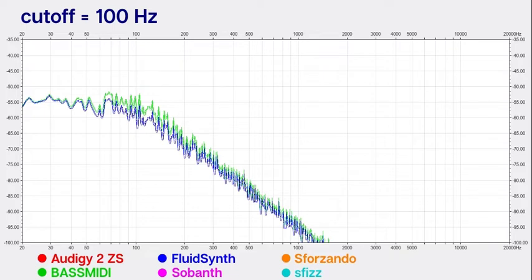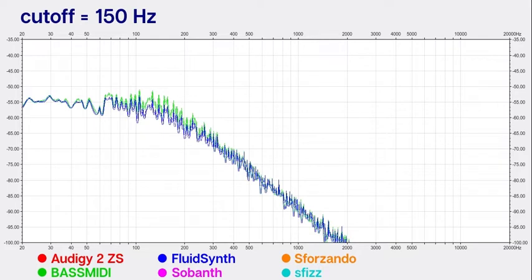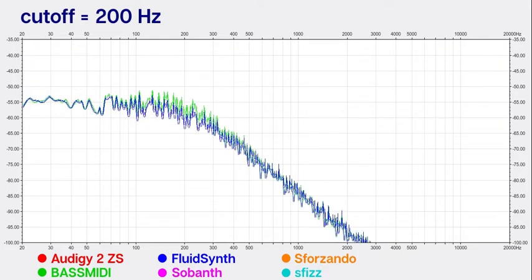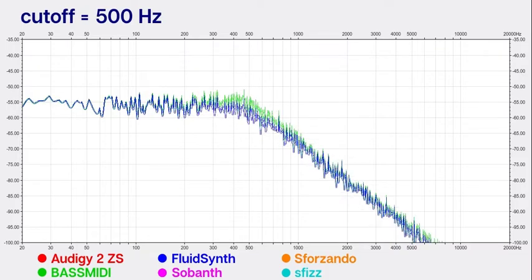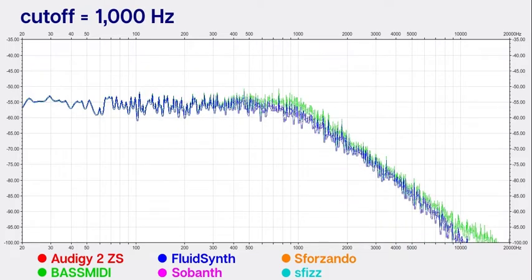Now something strange is going to happen here as I increase the frequency with BASSMIDI. So initially these two filters are mostly in lockstep, however as we get towards 1000 Hertz, you'll notice that we have this change to the curvature of the BASSMIDI filter.